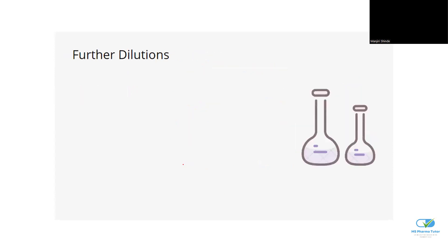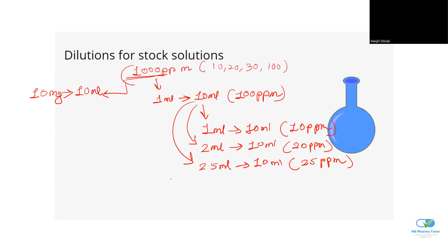Now I will give you the formula for the dilutions: C1V1 = C2V2. I will show you how to apply this formula and come up with these values. Once I give you the formula, you can cross-check it against the flowchart.